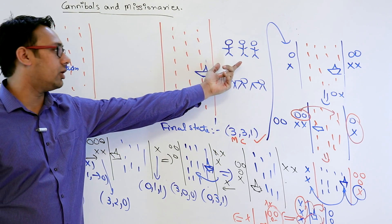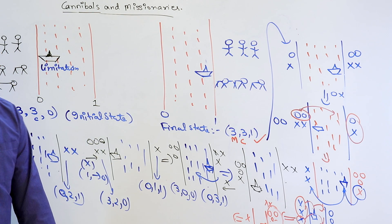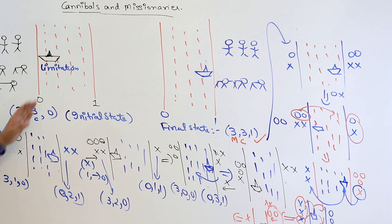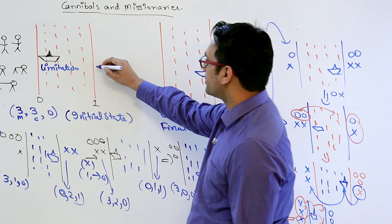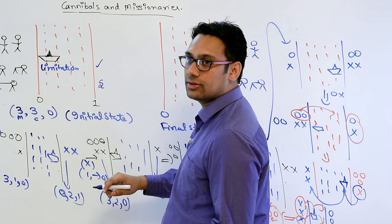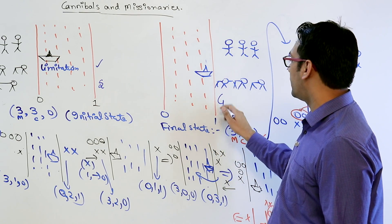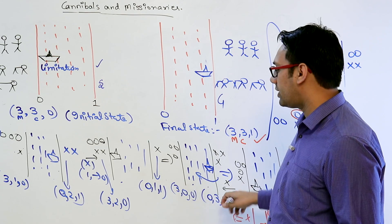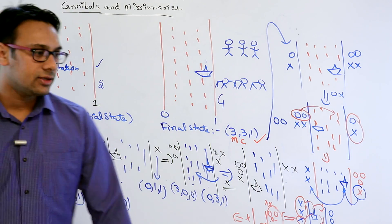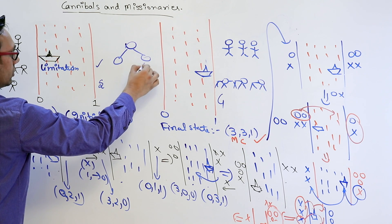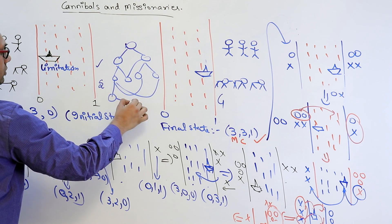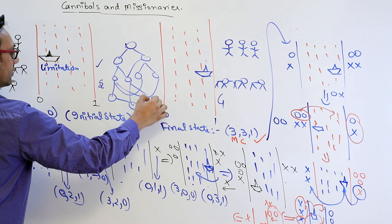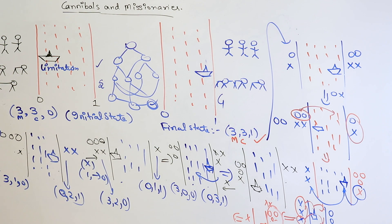We reach the final state where all missionaries and all cannibals are at the destination bank. This is the Cannibals and Missionaries problem. There is a state space here: we know the initial state S, the final goal state G, and all intermediate states. The problem can be represented with a graph where each node represents a different configuration.